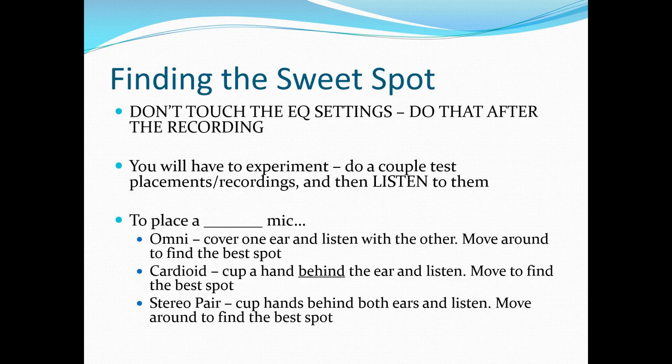Next, let's talk about finding the sweet spot. First and foremost, when you get in and start setting up mics, your EQ settings should be completely flat. Ideally, we want a perfectly flat horizontal line for our EQ curve. You will touch this after recording, or if during initial setup you need to boost a little in the high end or cut the low end, but by and large you're not going to touch it at this stage. Instead, experiment — do a couple of test placements and recordings, then listen to them. You can also walk around with one ear covered, or with your hands cupped behind your ears, to find the best spot.